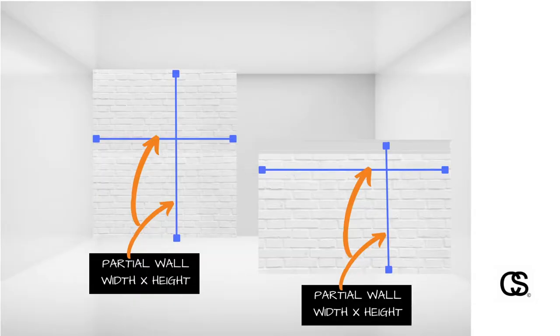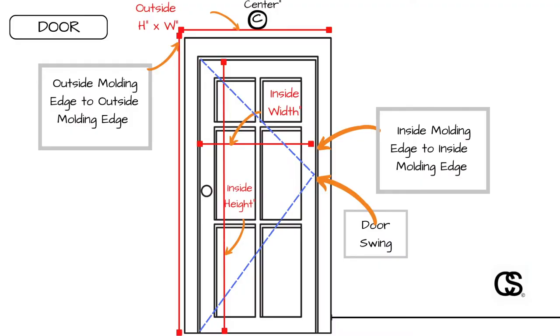Step four: measure any partial walls, pony walls, and any moldings that might be on those.